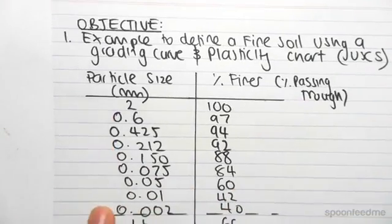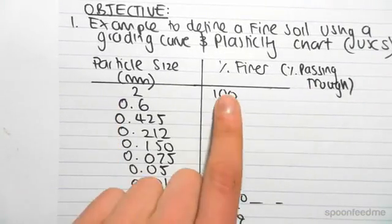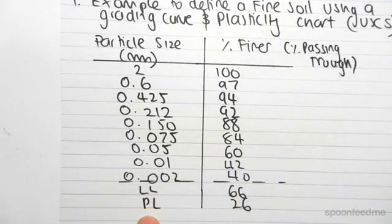We've been given a range of values, a range of diameter sizes against how much is passed through. We've also been given the liquid limit and the plastic limit.